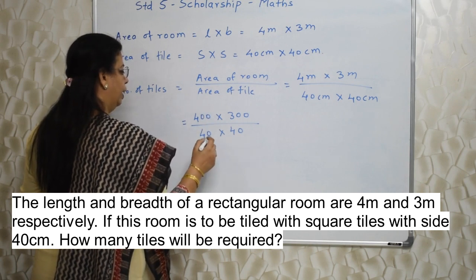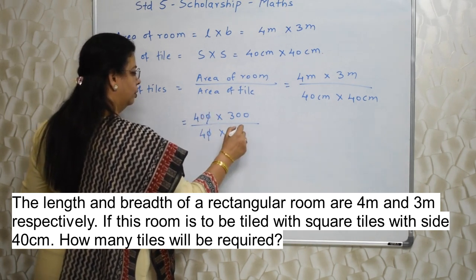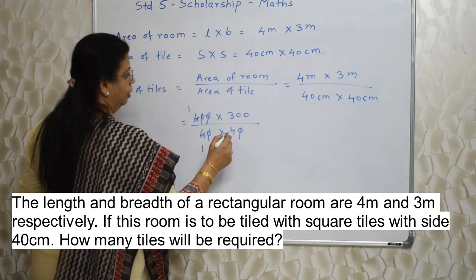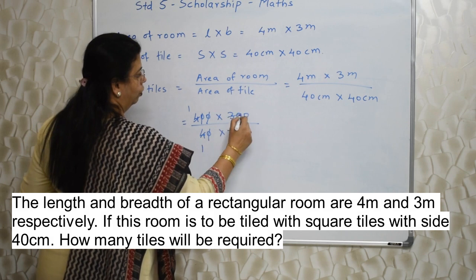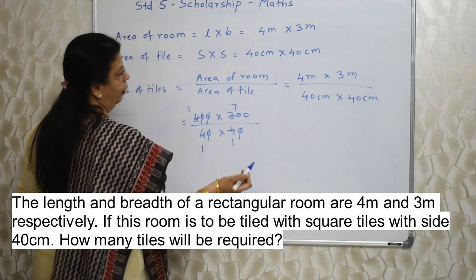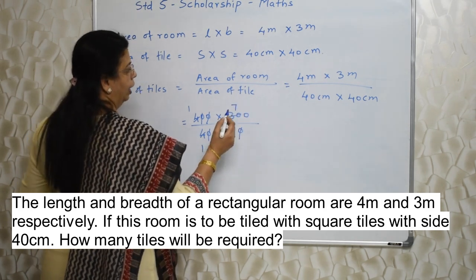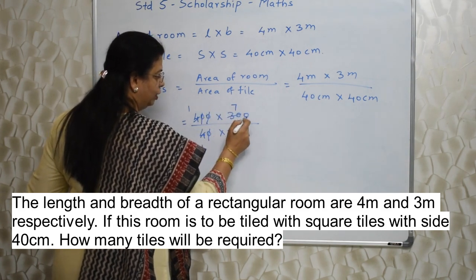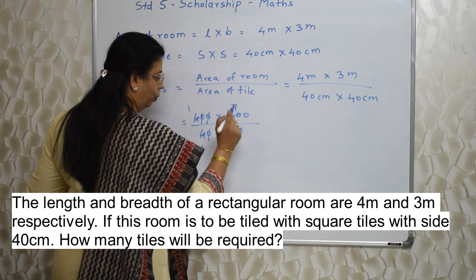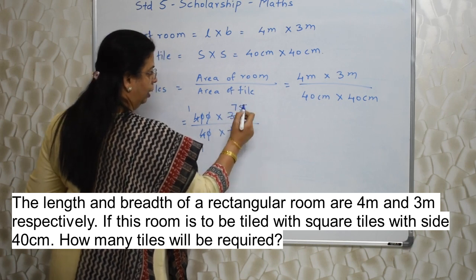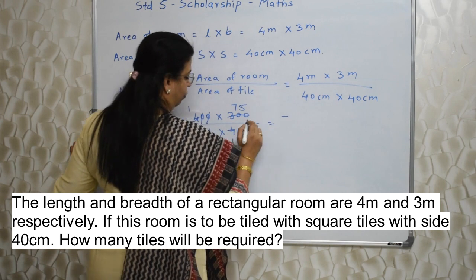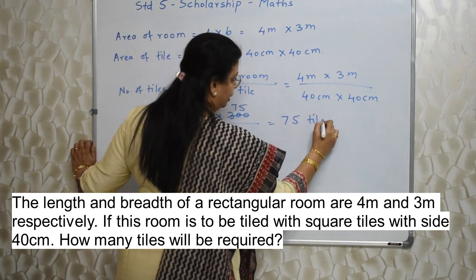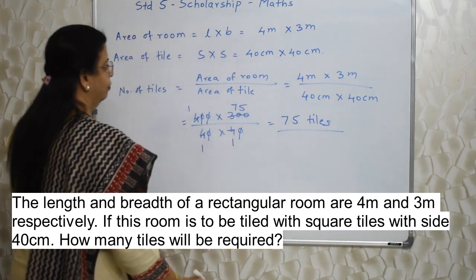Let's start calculating. Cancel the zeros. 4 ones are 4, 4 ones are 4, then 4 ones are 4. 4 sevens are 28, then 2 out of 30 — 28 we have used, so 2 are remaining. Attaching the 0, so 20. 4 fives are 20. So 75 tiles is the answer. Very easy — this sum is based on formula.